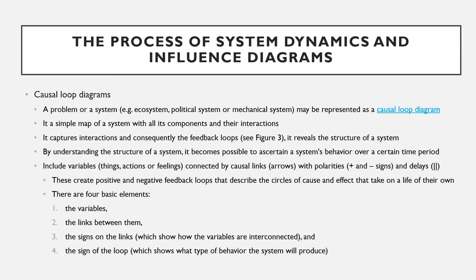In the system dynamics methodology, a problem or a system — which can be an ecosystem, political system, or mechanical system — may be represented as a causal loop diagram. A causal loop diagram is a simple map of a system with all its components and their interactions. By capturing interactions and consequently the feedback loop, a causal loop diagram reveals the structure of a system. By understanding the structure of a system, it becomes possible to ascertain a system's behavior over a certain time period. Causal loop diagrams consist of variables — which are things, actions, or feelings — connected by causal links, which are arrows with polarities, and delays. Together, these create positive and negative feedback loops that describe the circles of cause and effect.